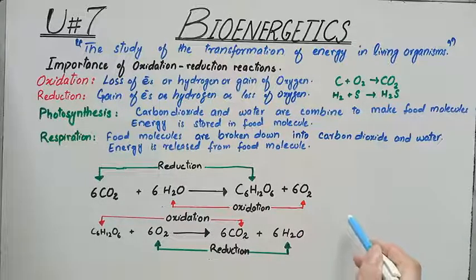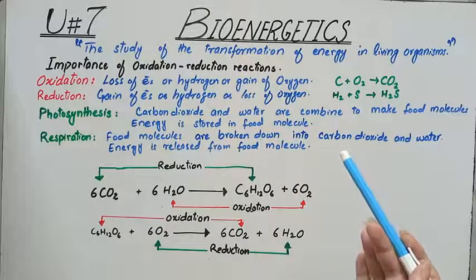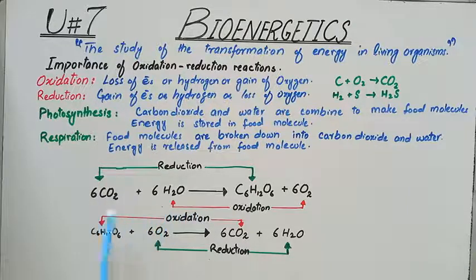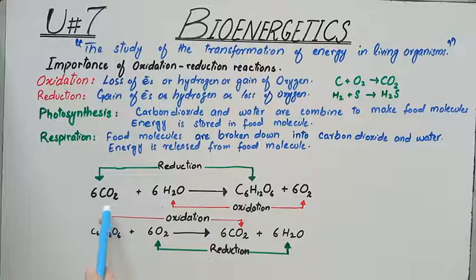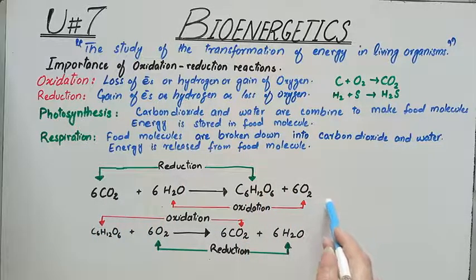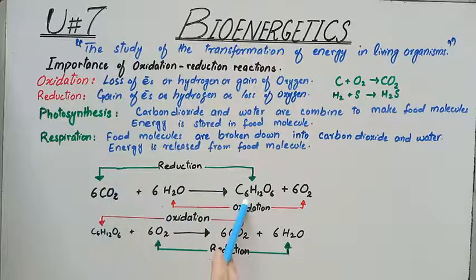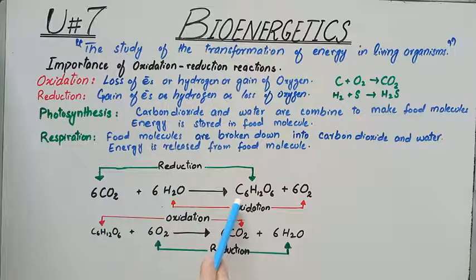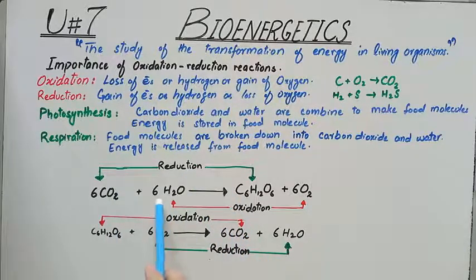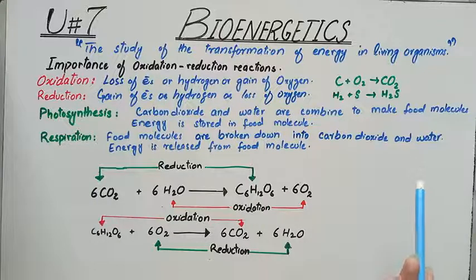Now check out this figure. The first equation shows photosynthesis: carbon dioxide reacts with water to form glucose, and oxygen gas is liberated. In this reaction, carbon dioxide is reduced to glucose — it has lost oxygen and gained hydrogen. Water is oxidized into oxygen — it has lost hydrogen and oxygen is released as a separate molecule.